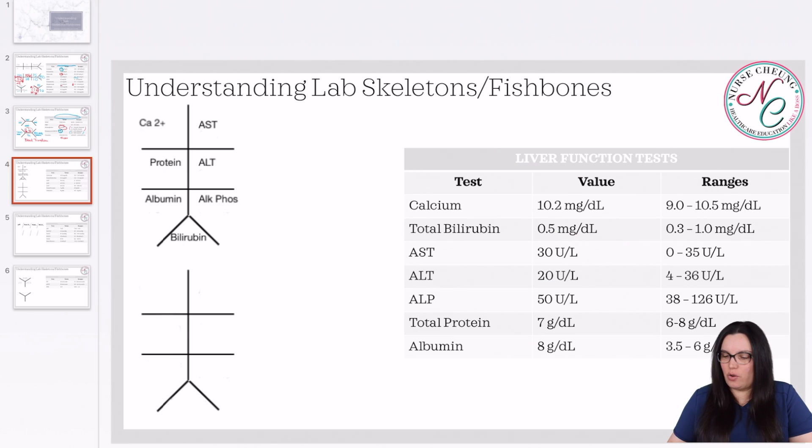So the next fish bone we're going to look at is our liver function test. So if we've got any kind of concern about there being liver disease or any kind of condition that would worsen liver function tests, this is a great fish bone all in one place to see what our liver function tests are. So we have our calcium, our AST, protein, ALT, albumin, alka-fos, and our bilirubin.